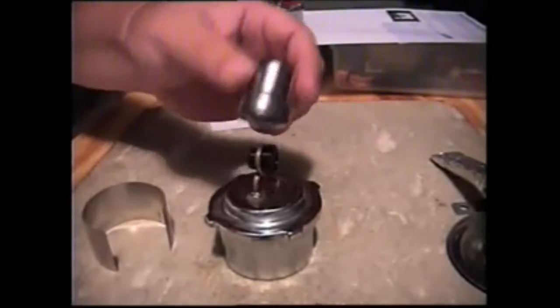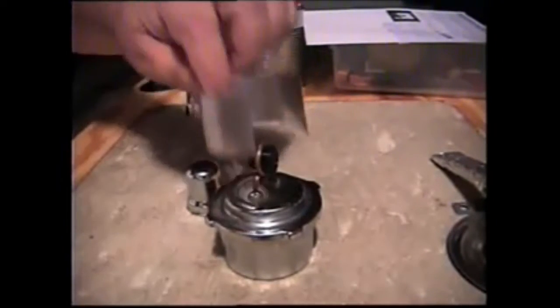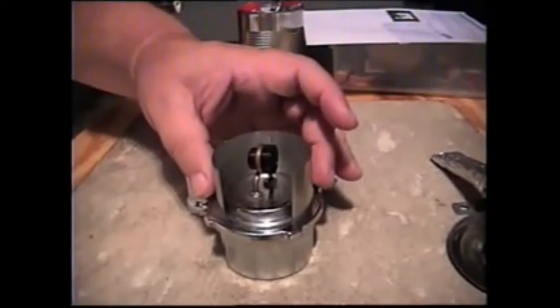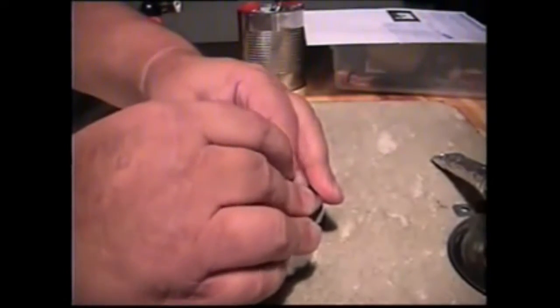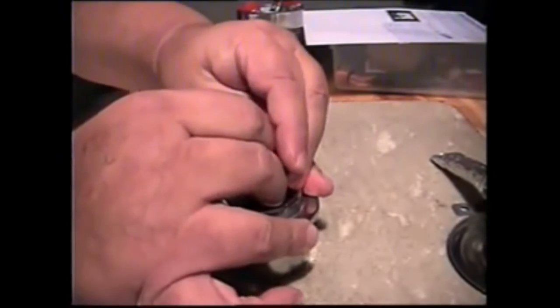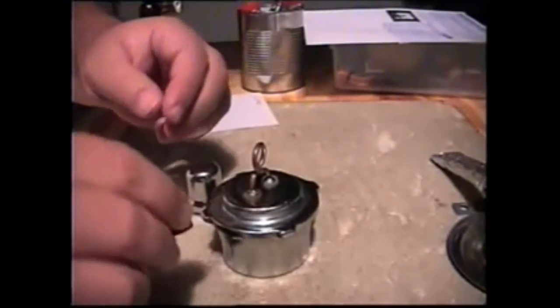Comes with a burner, a snuff cap, a little windscreen that goes on like that. Cork to cover up and close off the two jet holes. It's just a rubber cork.